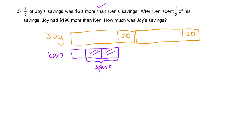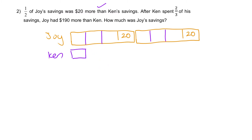Joy had $190 more than Kent after Kent spent two-thirds. Before going to that, let's partition: if Kent's is broken into three units, we do the same for Joy's corresponding portion — so three units there and three units here. Kent spent two-thirds, so those two-thirds are gone, and Joy has $190 more than the remaining Kent amount. So from Joy's level down to Kent's remaining is $190.